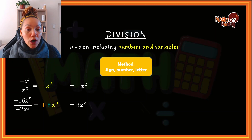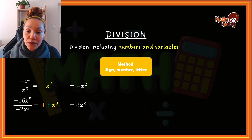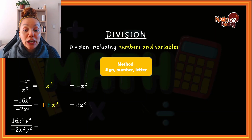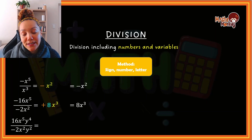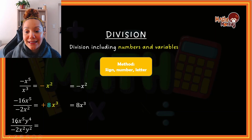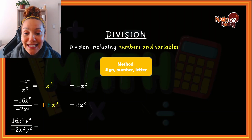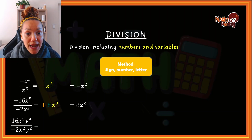Let's try a slightly harder question. It looks harder but I'm following the exact same steps. First, I identify what type of question this is — it's a division question because I see the fraction. Secondly, the method is sign, number, letter.